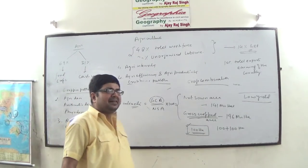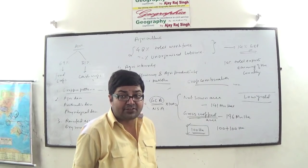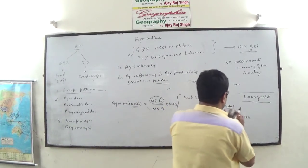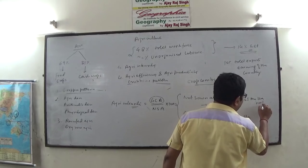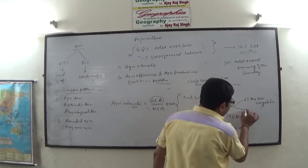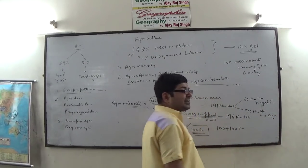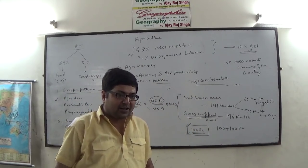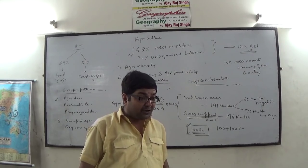In India, agricultural intensity is constrained by the availability of water. You can go for multiple crops in a single year only if the availability of water is there. Out of 141 million hectares, it is only 65 million hectares where irrigation facilities are available. 76 million hectares depends upon rain — that is, 56% of the gross crop area is dependent on rain. When you do not have an assured supply of water, you cannot go for the second crop.